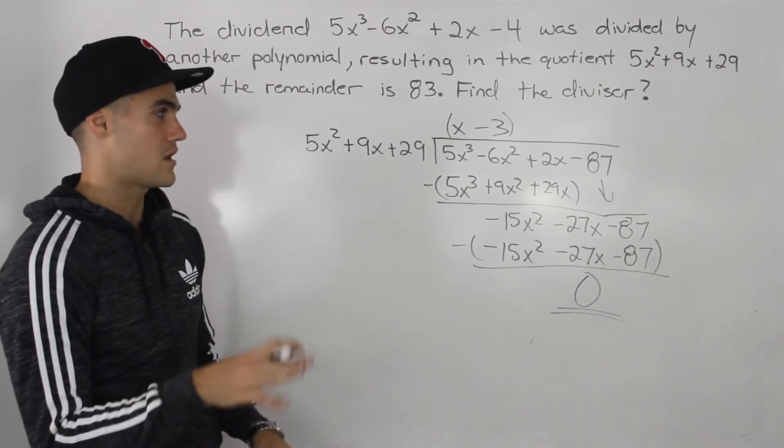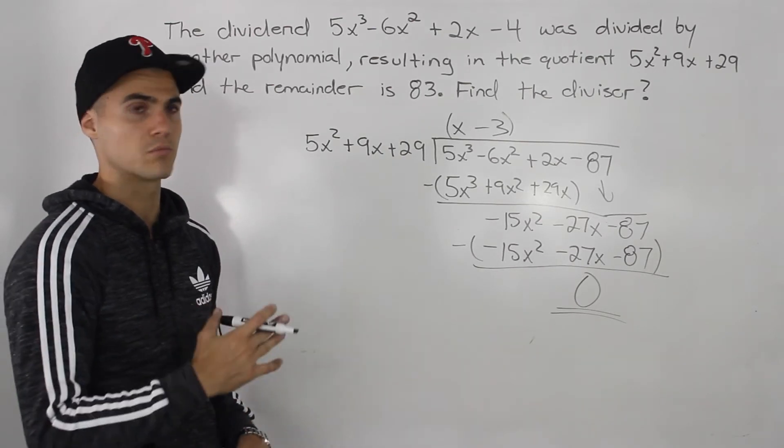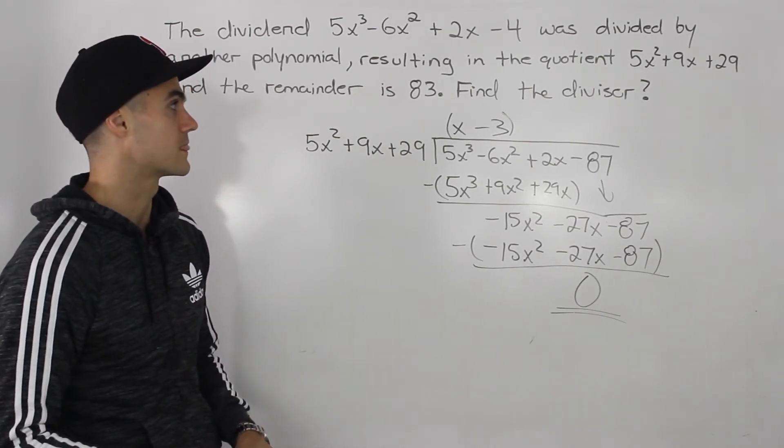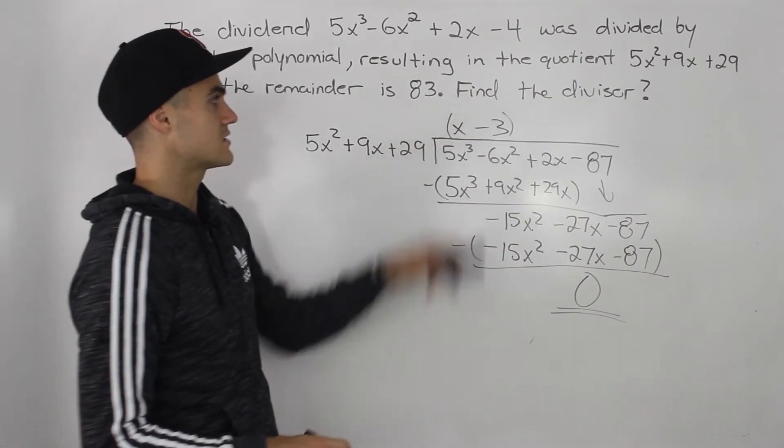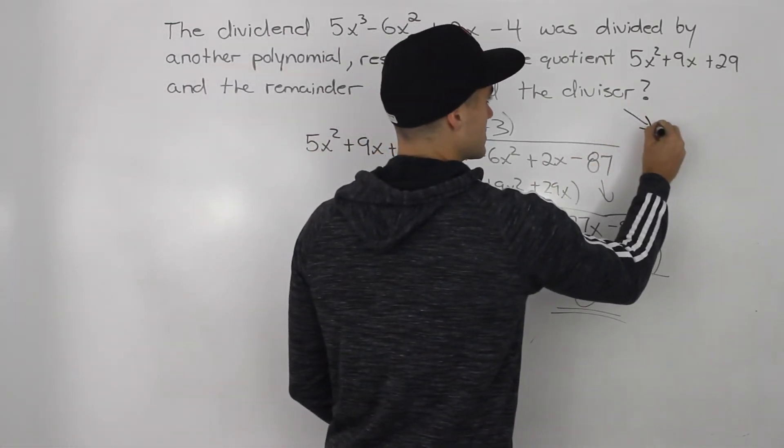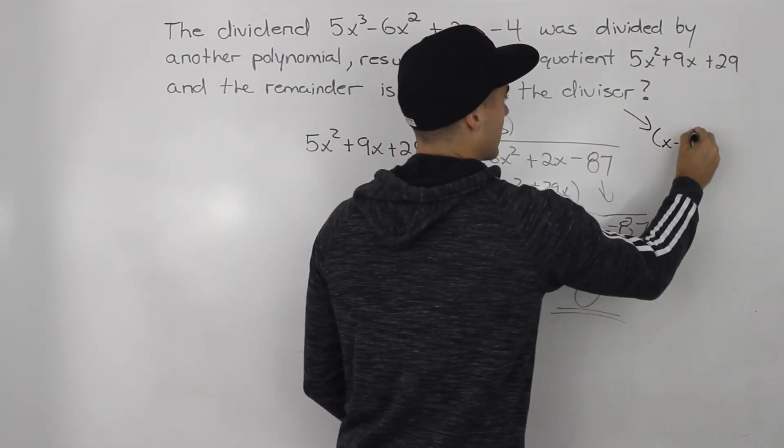So you should always get a remainder of 0. If you don't, then you know you went wrong somewhere before. You got to go back and find that mistake. So that is the answer. What is the divisor of this? Well, it is x minus 3.